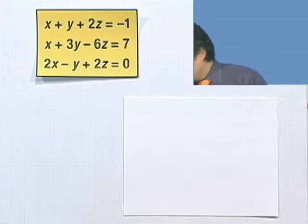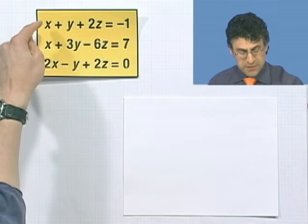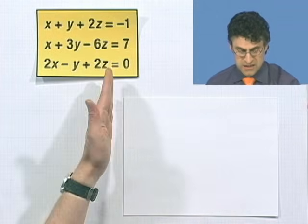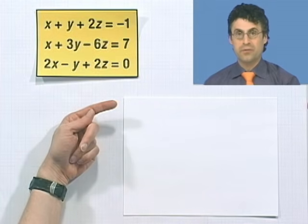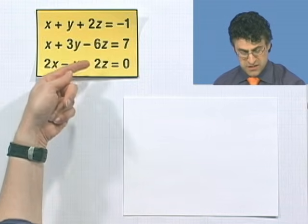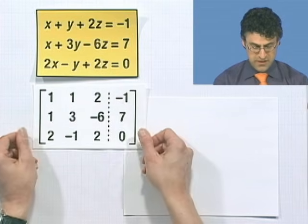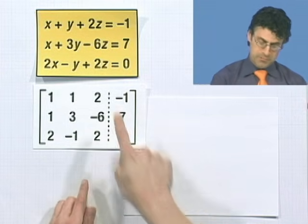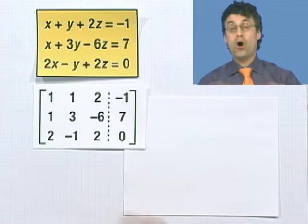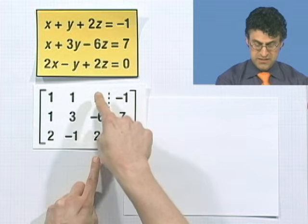The first thing we want to do is create this augmented matrix. The augmented matrix is given to us by considering the coefficients and writing them in the appropriate spots: the x's, the y's, and the z's, then we augment the constants on the far right. Reading down: 1, 1, 2; 1, 3, negative 1; 2, negative 6, 2; negative 1, 7, 0. So this is our augmented matrix. We understand this is the x column, this is the y column, and this is the z column.